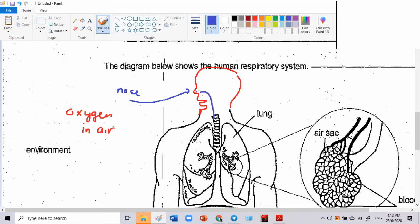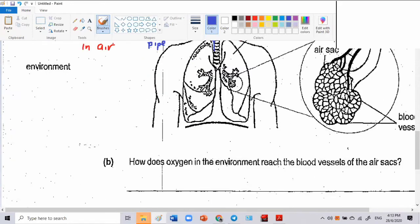And down the, what is it called? Wind pipe. Wind pipe. Do you know wind pipe? Wind pipe. And into the lungs. Enter from the nose into the wind pipe, into the lungs. And to reach the blood vessels in the air sac. The oxygen enters the lungs into the air sac to reach the blood vessels. In the air sac, they reach the blood. And then the oxygen will diffuse into the blood vessels.